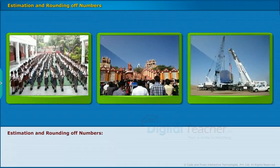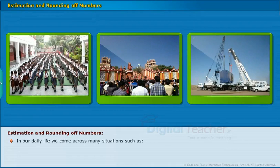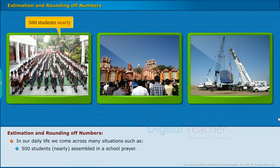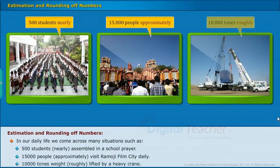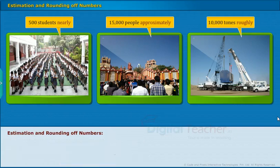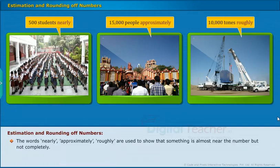Estimation and rounding of numbers: In our daily life, we come across many situations, such as 500 students nearly assembled in a school prayer, 15,000 people approximately visit Ramoji Film City daily, 10,000 tons weight roughly lifted by a heavy crane. The words nearly, approximately, roughly are used to show that something is almost near the number, but not completely.